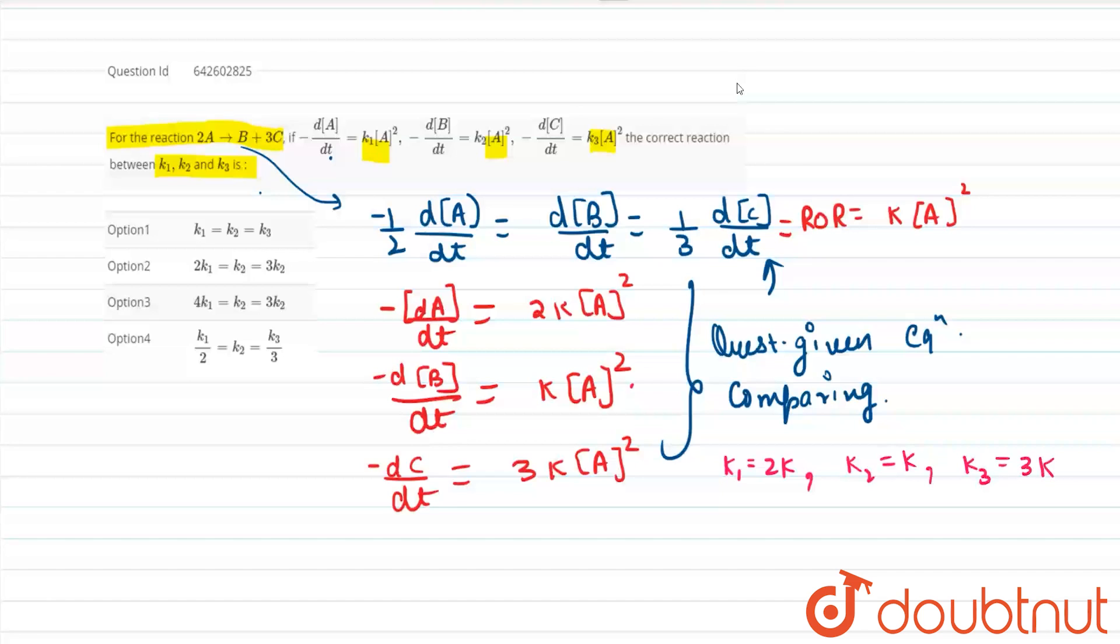So now checking the option. So k1 equals k2 equals k3. So this is a wrong option. Twice k1 equals k2 equals thrice k2. So let us check if we do twice k1. So it will be 4k for option number 2.